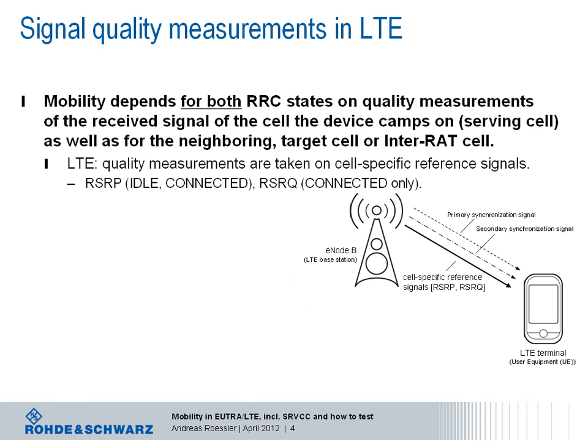Generally speaking, the mobility handling depends, for both RRC states — idle and connected — always on quality measurements of the received signal from the serving cell where the UE camps on, neighboring cells, as well as for the target cell, if it is an LTE-to-LTE handover or to a cell belonging to another radio access technology such as GSM, wideband CDMA, or 1X RTT and 1X EVDO.